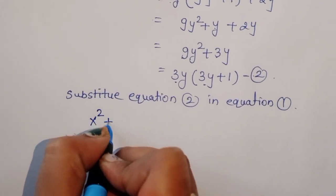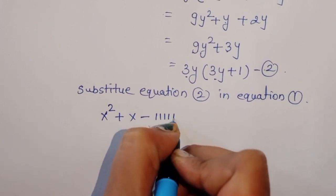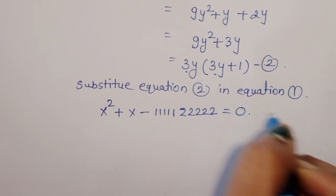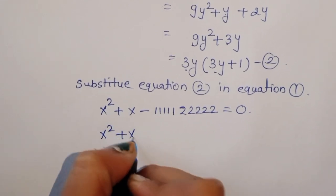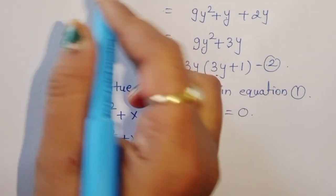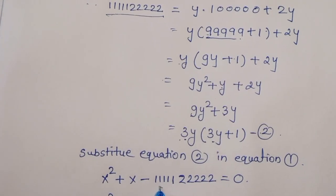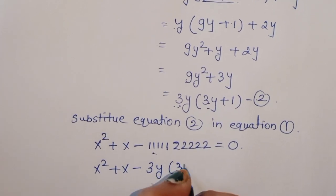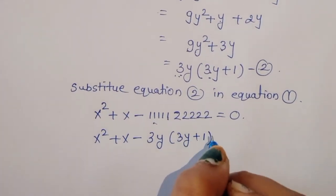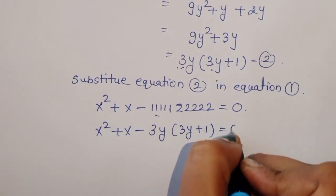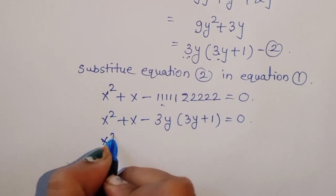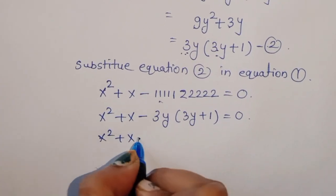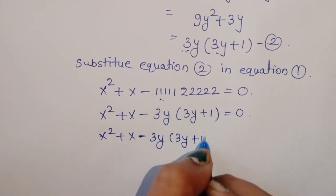So we can write equation 1 as: x squared plus x minus 1111122222 equal to 0, which becomes x squared plus x minus 3y times 3y plus 1 is equal to 0.